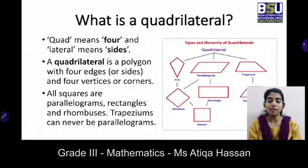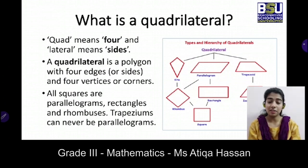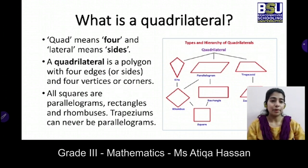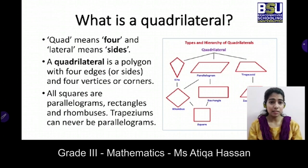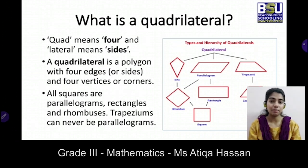The family includes kite, parallelogram, and trapezoid, which is further divided into different quadrilaterals. Trapezoid is also known as trapezium, so we have one shape with two names — trapezium or trapezoid. These are all interlinked.